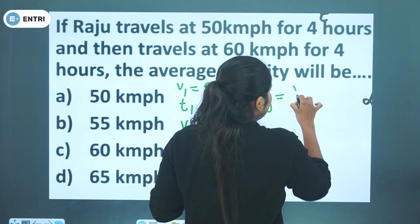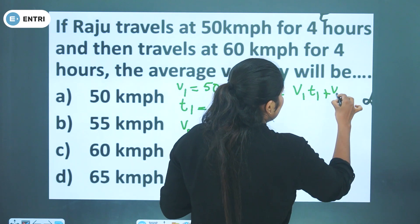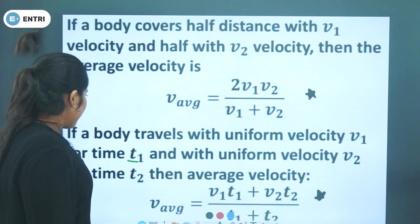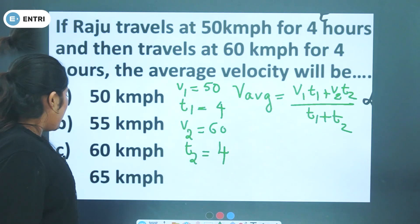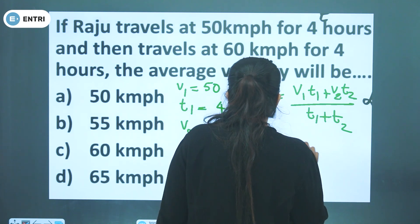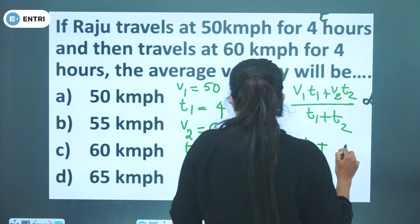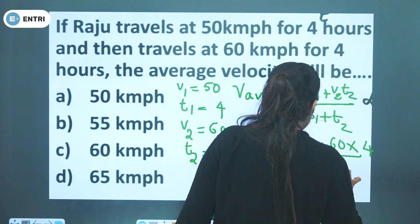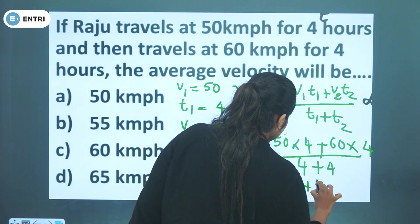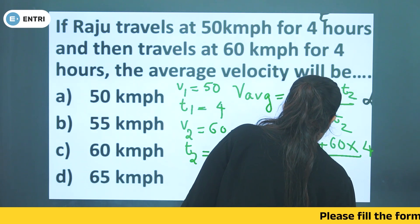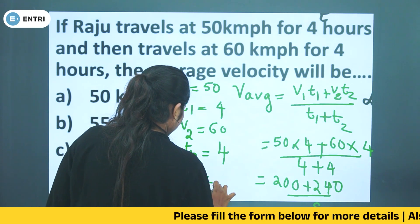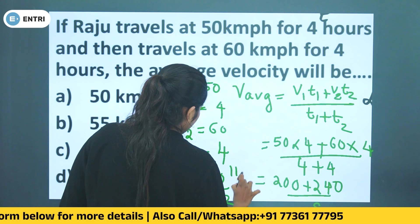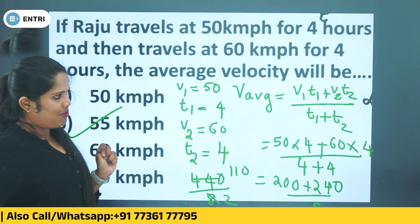Using the formula: average velocity equals v1t1 plus v2t2 divided by t1 plus t2. That is, 50 times 4 plus 60 times 4, divided by 4 plus 4. This gives 200 plus 240 divided by 8, which equals 440 divided by 8, equal to 55 km per hour. The answer is option B: 55 km per hour.